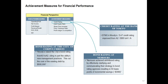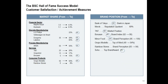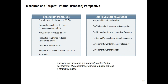Achievement measures for financial performance include credit rating and bond rating. Execution and achievement measures for internal processes include: execution measure examples such as overall planned effectiveness at 98.7%, non-performing loans decreased 11 consecutive months, new product revenues up 48%, production lead times reduced from 25 days to 2 days, cost reduction up 187%, and number of accidents per year dropped from 14 to 0. Achievement measure examples include integrated industry value chain, COSO-based risk assessment composite, first to produce in next-generation factories, Six Sigma process improvement composite, and government awards for energy efficiency and safety.